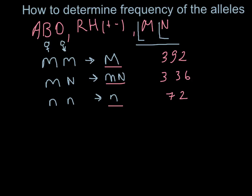and 336 that have an MN group, and 72 people that have N group, and all together it's 800 people.